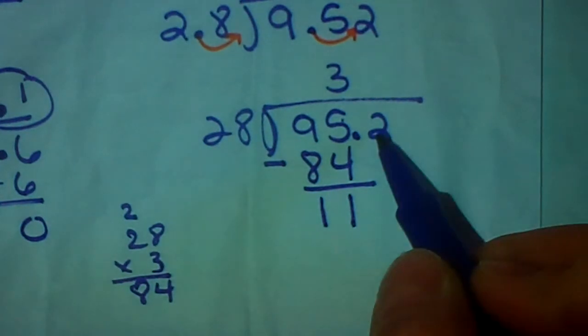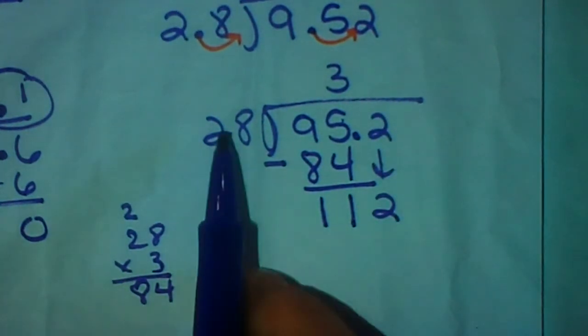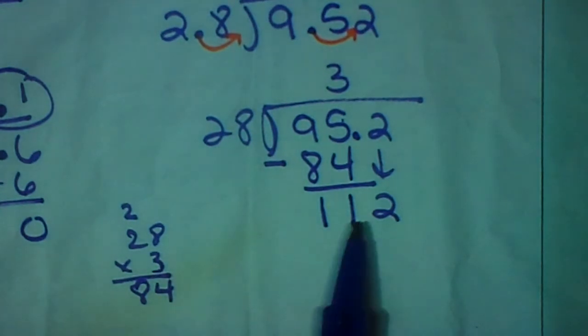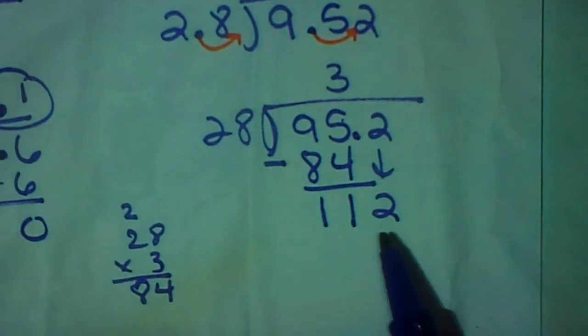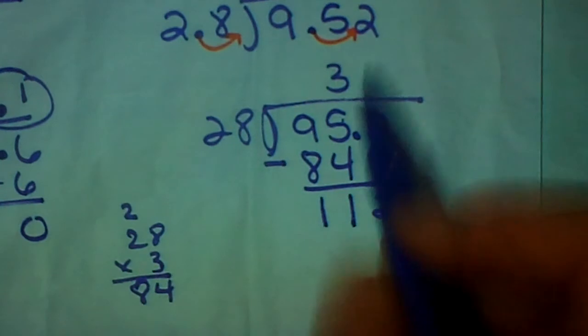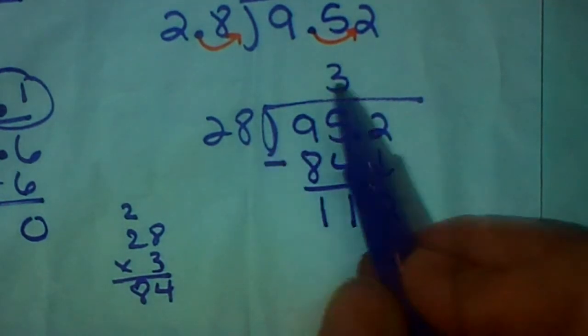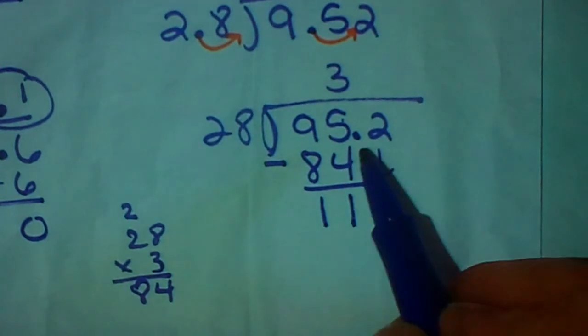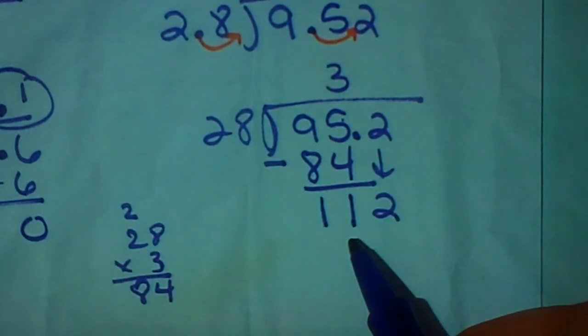We're not done yet. We still have a 2 here. We're going to bring it down. And now, again, I need to divide 28 into 112. So, again, maybe counting by 30 can be helpful. 30, 60, 90, 120. Now, 4 times would give me 120. If I take 28 times 3, it gives me 84. I am guessing I could probably squeeze 4 twenty-eights into 112. I'm going to give it a shot.